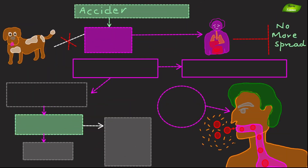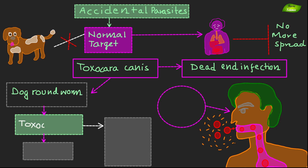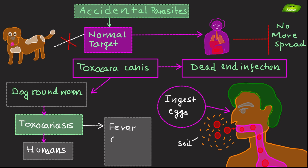Accidental parasites infect a host that is not their normal target, often resulting in atypical or dead-end infections. An example is Toxocara canis, the dog roundworm, which can accidentally infect humans, leading to toxocariasis. This occurs when humans ingest eggs from contaminated soil, leading to symptoms like fever, coughing, and vision problems.